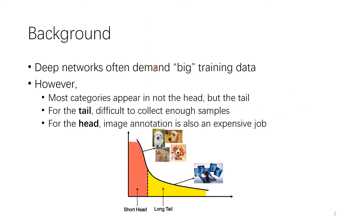Object recognition has been significantly improved in the past decade with the rapid growth of data and the help of deep learning. However, the frequency distribution of visual categories presents the form of a long-tail distribution, which means it is difficult to collect enough samples for categories on the tail part. Even for categories on the head part, large-scale annotation is also a heavy and expensive job. Therefore, we study the more realistic task of few-shot learning, which means learning new categories based on few samples.